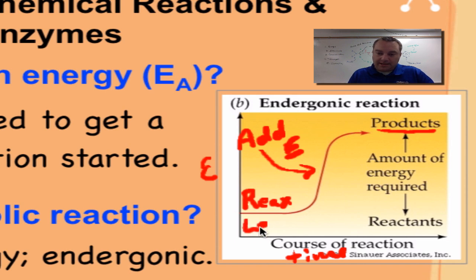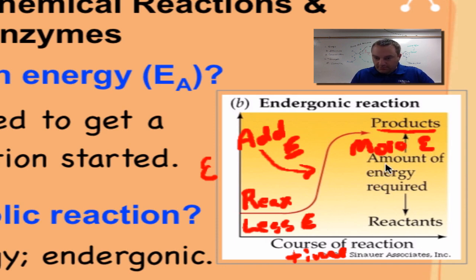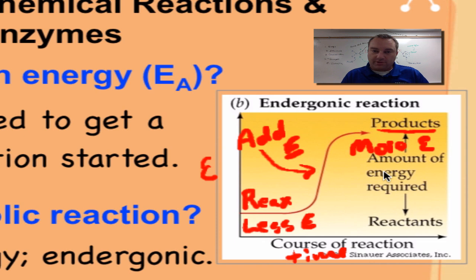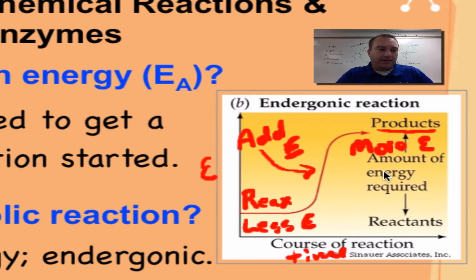The reactants have less energy, and the products have more energy. The difference between them is the amount of energy required. This is an anabolic or endergonic reaction — we've had to add energy to get it going. This type of chemical reaction will typically not occur naturally; it's going to need a lot of help, and that's where an enzyme comes in.